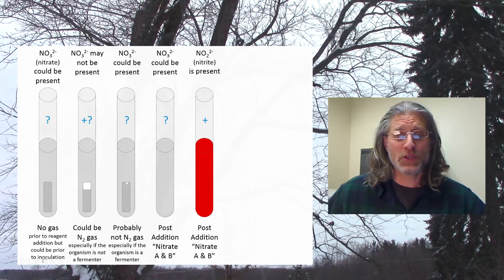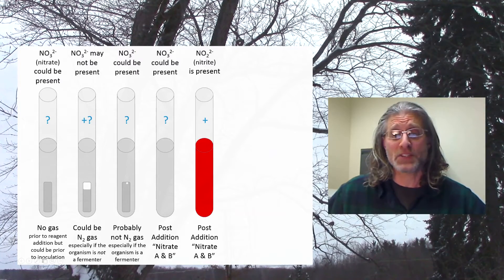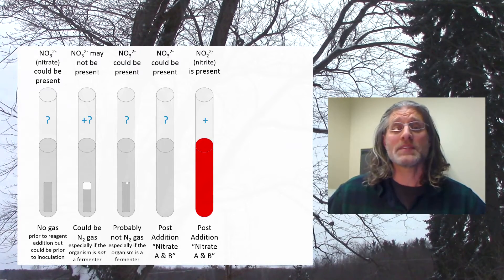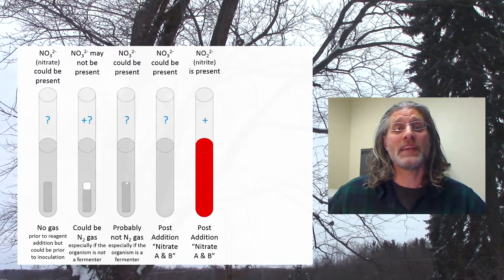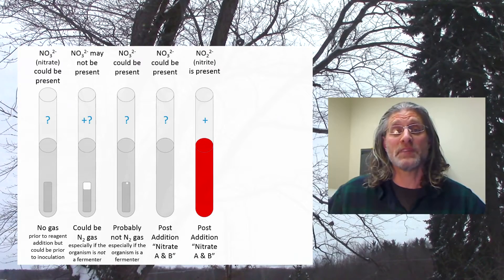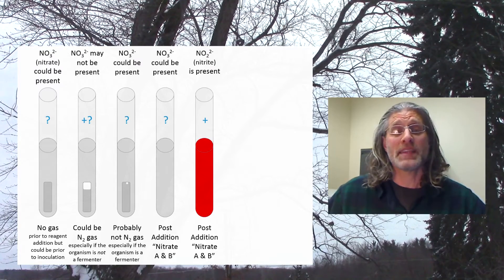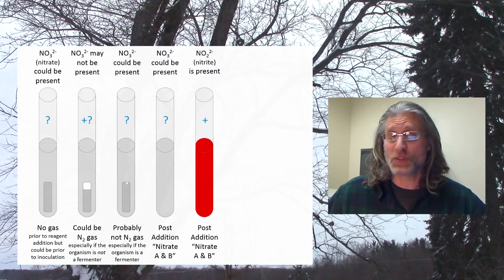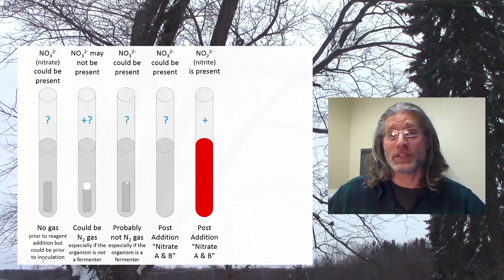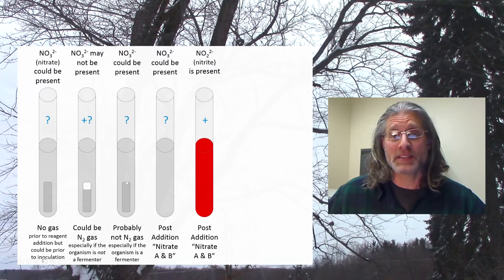Here we have a tube following the addition of these reagents that has turned red. The presence of this red color is indicative that nitrite, NO2 2-, is present. If nitrite is present, that means that nitrate has been reduced to nitrite. Therefore, this is a nitrate reduction positive result.